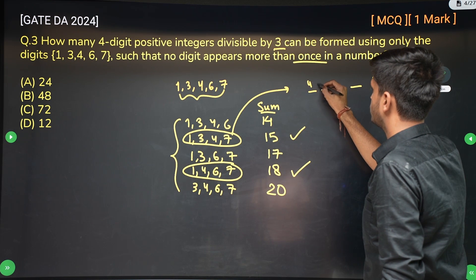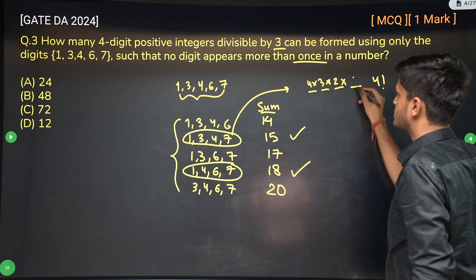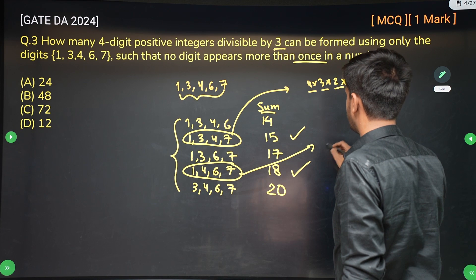Right? 4 into 3 into 2 into 1 because we have 4 options for this place, 3 options for this place, 2 options for this place, 1 option for this place. And similarly using 1, 4, 6, 7 also, I can create 4 factorial numbers.